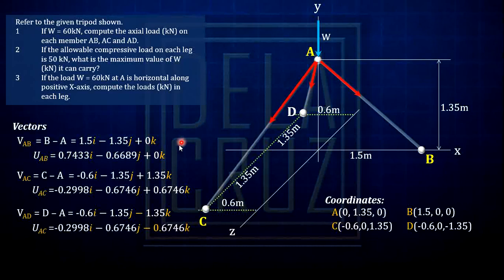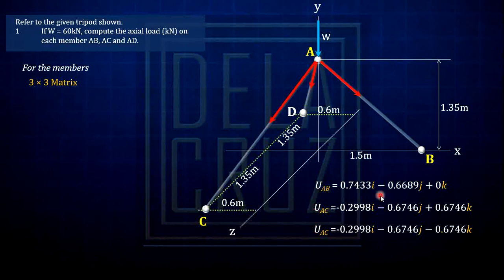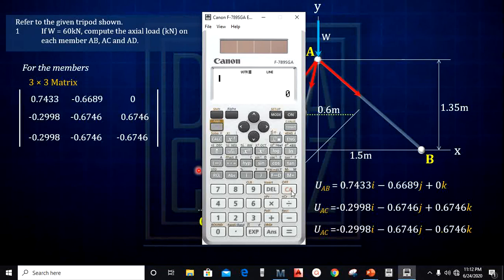Now we have all the unit vectors. These are important because they represent the XYZ components of each force. Now for question number 1 — if W is 60 kN — compute the actual load in each member. We will place these force member components into a 3×3 matrix, where each row spans the X, Y, Z components of each member.